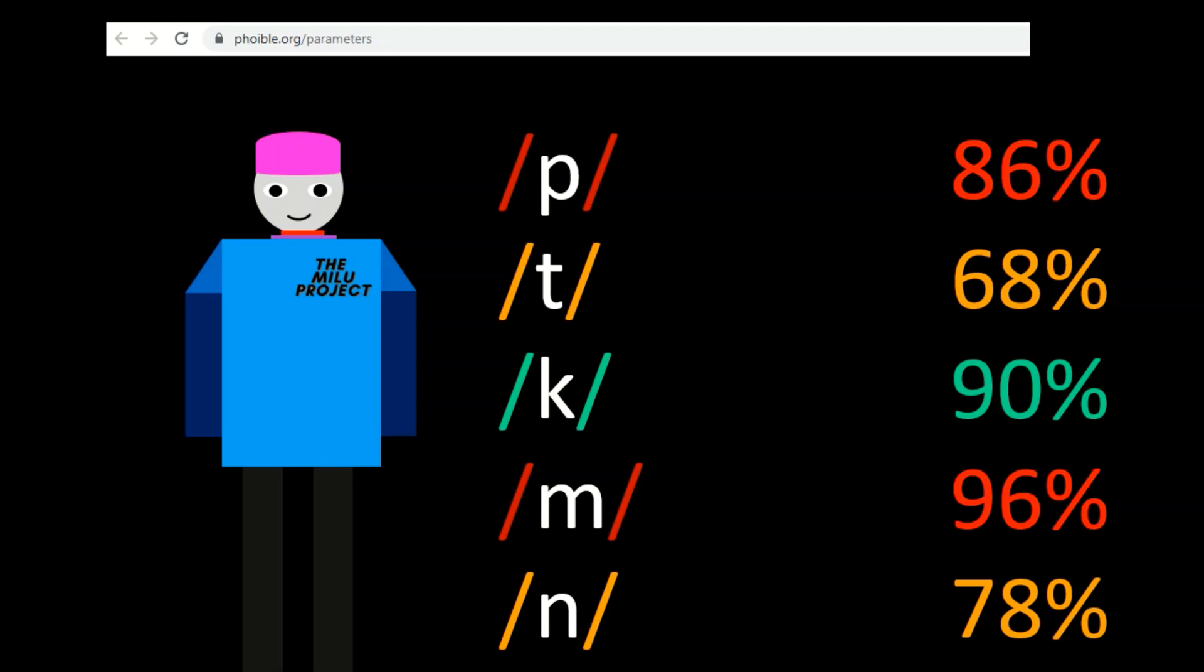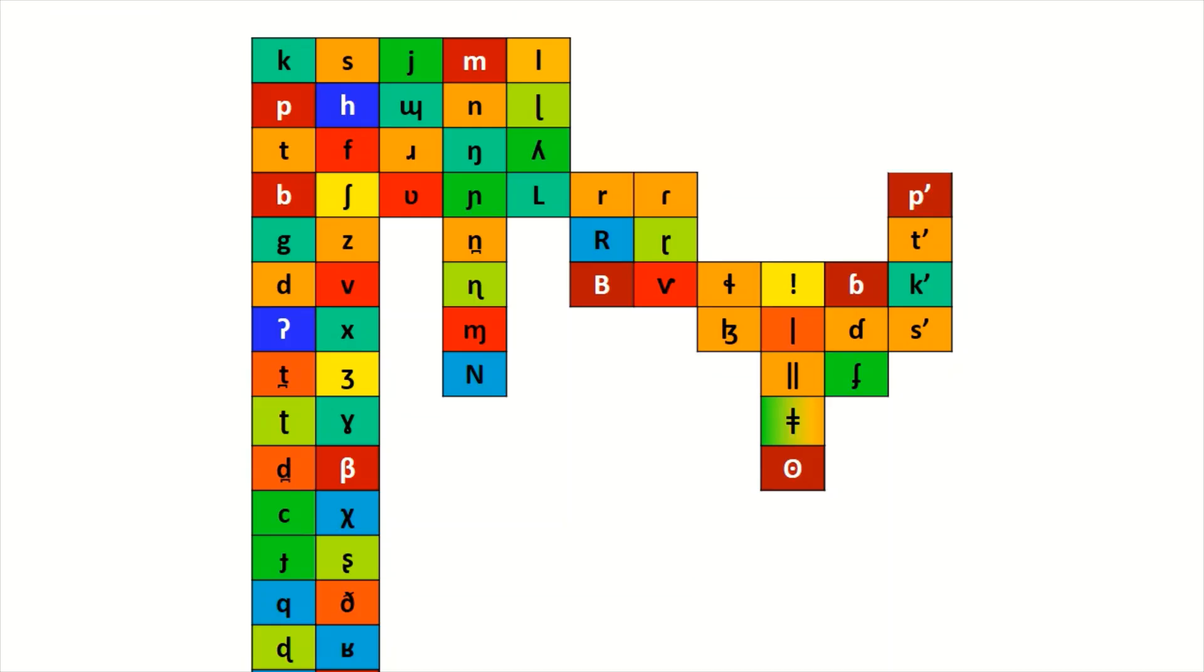Now, after arranging all the sounds according to frequency and manners of articulation, this is our new chart. Along the y-axis, the sounds are ordered according to their frequencies in human languages. And on the x, their manners of articulation.